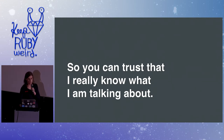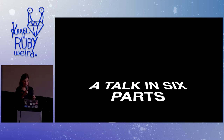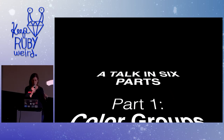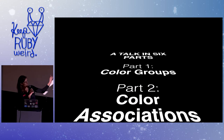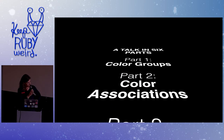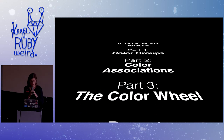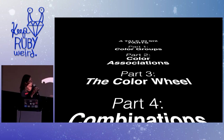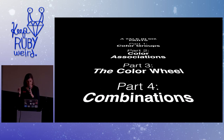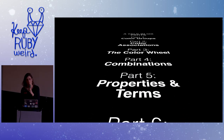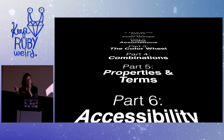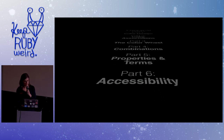Very trustable. So this talk, we are going to be in six parts. We'll talk about color groups, color associations, the color wheel, color combinations, color properties and terms, and accessibility — just a little bit, because it's important.